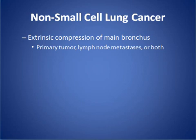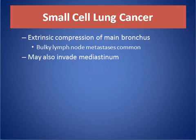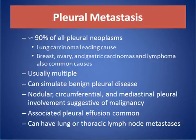Non-small cell lung cancer causes extrinsic compression of the main bronchus from a primary tumor, lymph nodes, or both. Small cell lung cancer causes extrinsic compression of the main bronchus with bulky lymph nodes, and metastases may invade the mediastinum. Pleural metastases account for almost 90% of all pleural neoplasms — lung carcinoma is the leading cause, followed by breast, ovary, gastric carcinoma, and lymphoma. They are usually multiple, can simulate benign pleural disease, and can be nodular or circumferential with mediastinal involvement and associated pleural effusion.